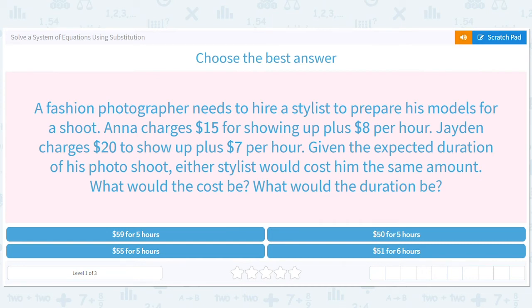So a fashion photographer needs to hire a stylist to prepare his models for a shoot. Anna charges $15 for showing up plus $8 per hour. Jaden charges $20 to show up plus $7 per hour. Given the expected duration of his photo shoot, either stylist would cost him the same amount. What would the cost be? What would the duration be?